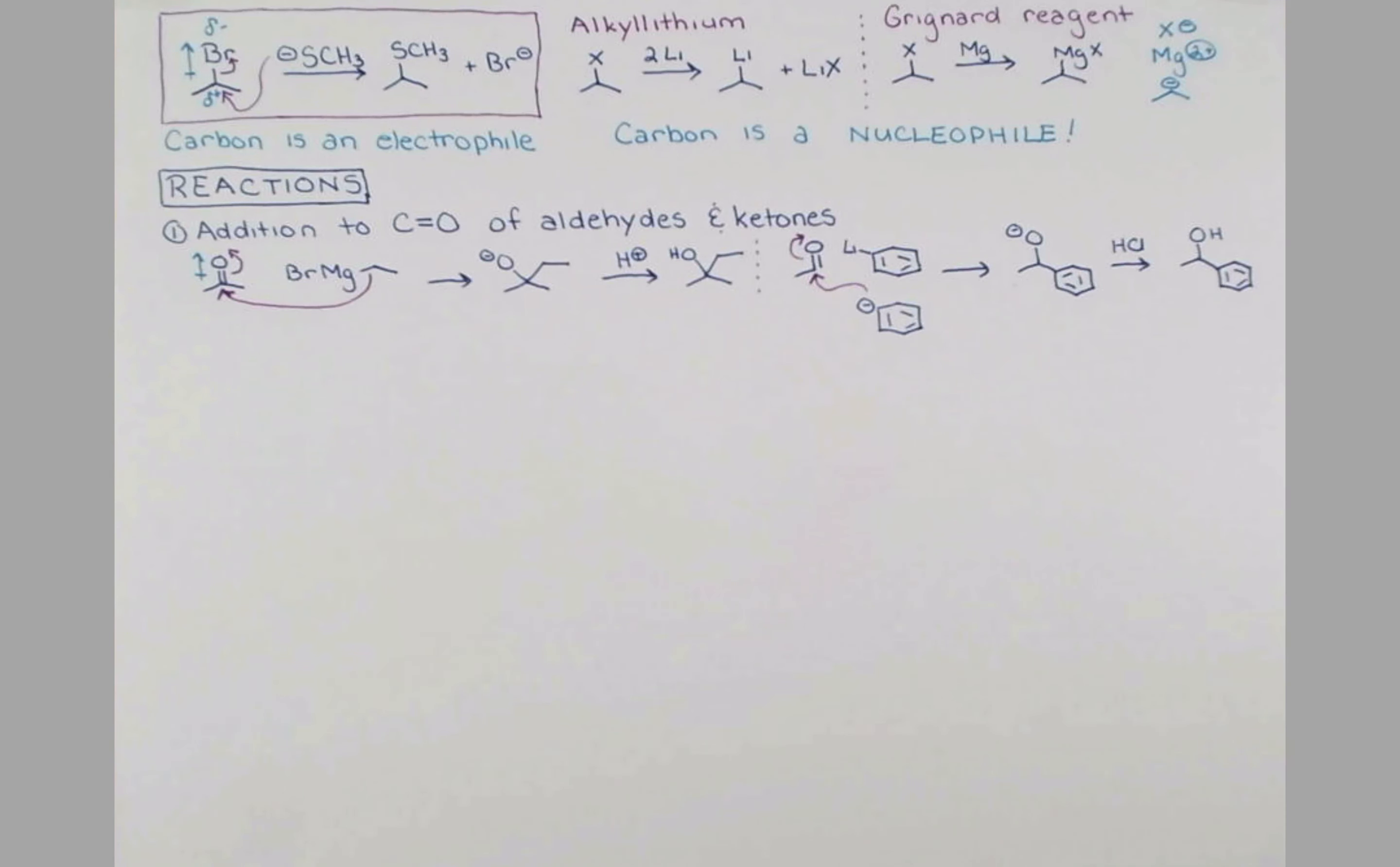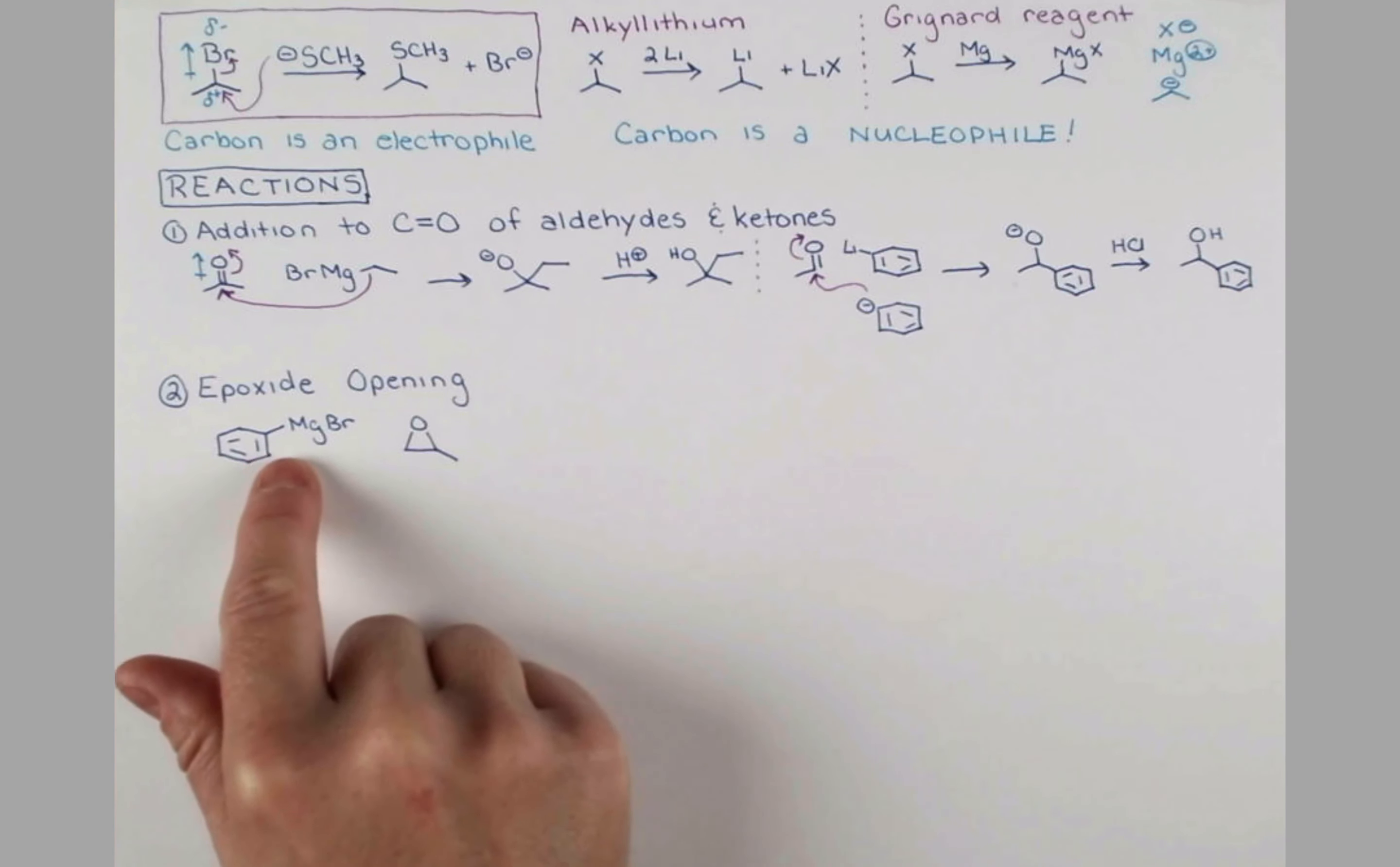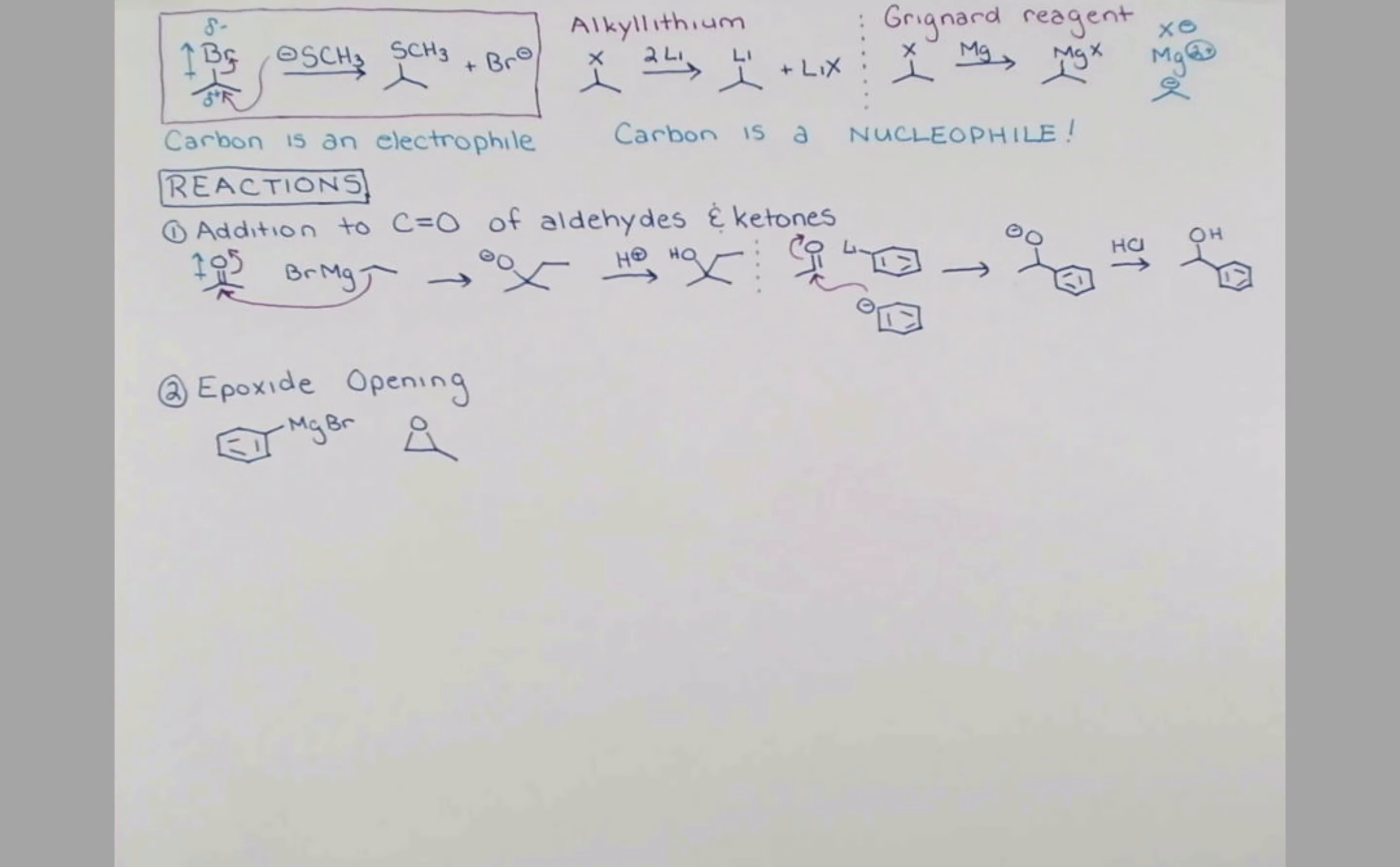We have another reaction that forms a carbon-carbon bond. That's epoxide opening. For this example, let's use the phenyl reagent again, but we're going to use a Grignard this time. We're going to react this with a substituted epoxide. When we add the epoxide to this reagent, the nucleophilic carbon atom is going to attack on the side with least steric hindrance. We have the little methyl over here, so the bond is going to form on this side, the least sterically hindered side.